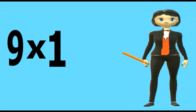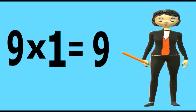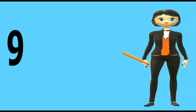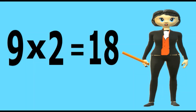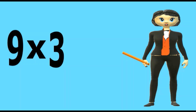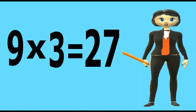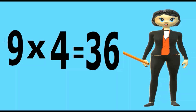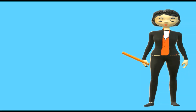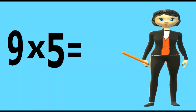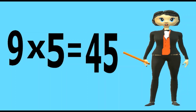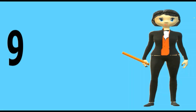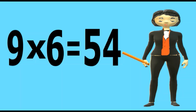Nine ones are nine. Nine twos are eighteen. Nine threes are twenty-seven. Nine fours are thirty-six. Nine fives are forty-five. Nine sixes are fifty-four.